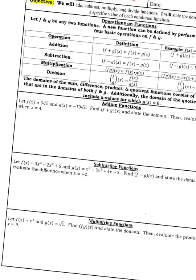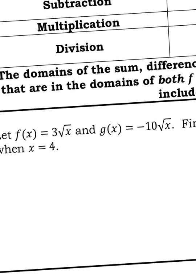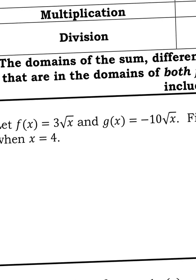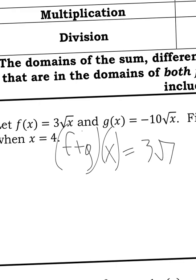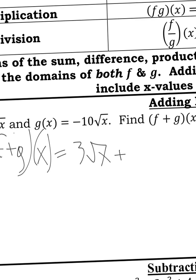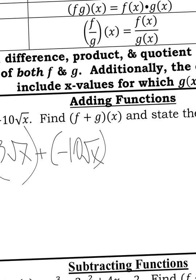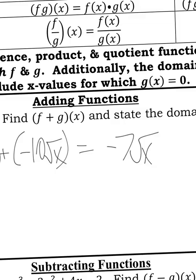Let's get started. I'm going to add 3 square root of x and negative 10 square root of x. So the notation will look like f plus g of x equals 3 square root of x plus negative 10 square root of x. I like to put things in parentheses. What is 3 plus negative 10? That's going to be negative 7. The square root of x would just stay behind. That's the answer when you add the two functions together.